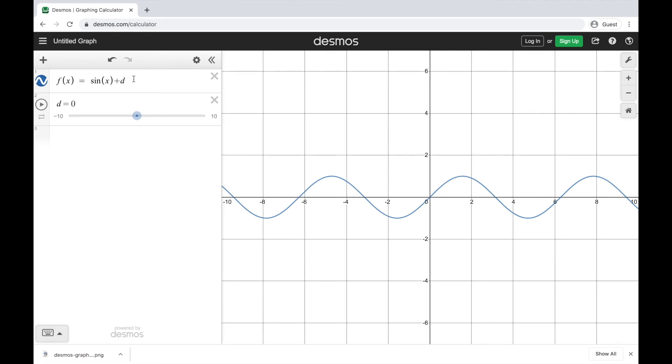Here I have my function f(x) equal to sine x plus d. So here's my normal sine graph. I can see that for positive values of d, it's just going to shift my graph up further along the y-axis. And negative values are going to shift it further and further down the y-axis. So adding a number to the end is going to tell me how much this is shifted vertically off of the x-axis.